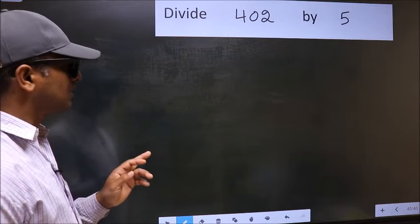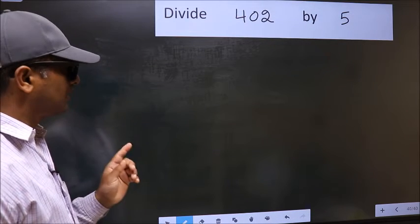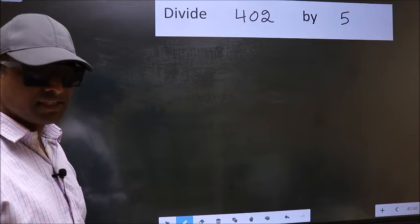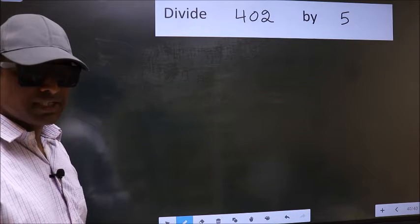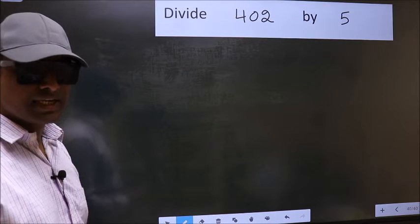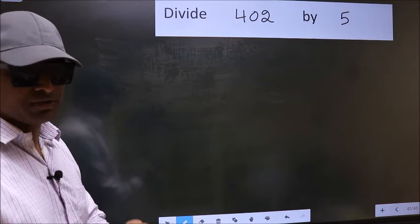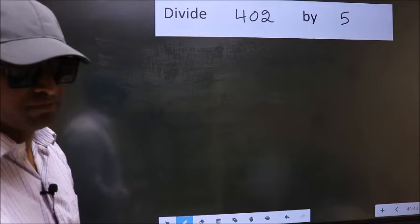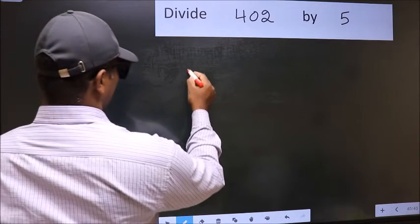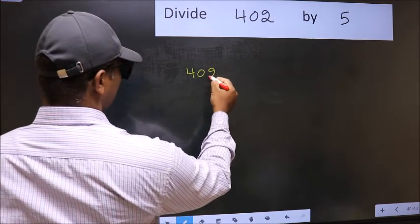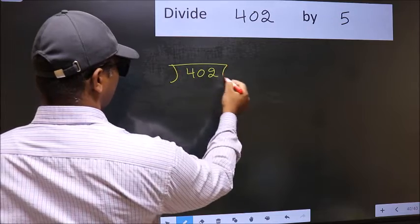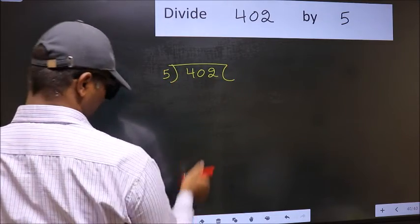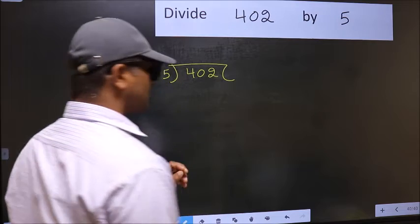Divide 402 by 5. While doing this division, many do this mistake. What is the mistake that they do? I will let you know, but before that we should frame it in this way: 402 and 5 here.